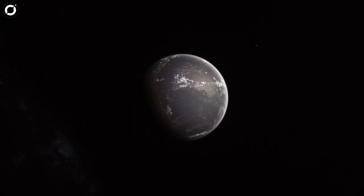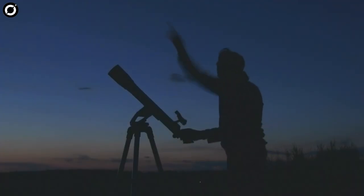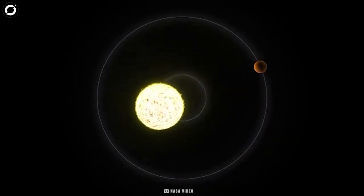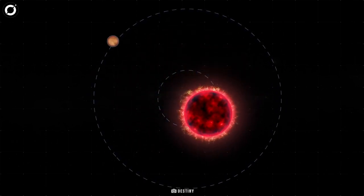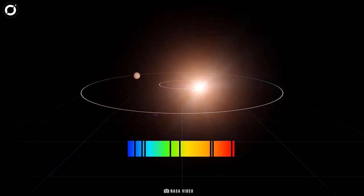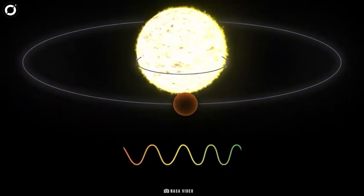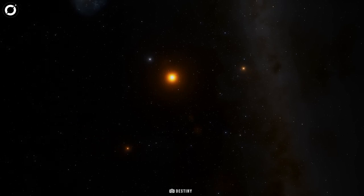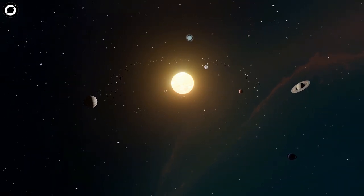The derived location turned out to be Proxima b, discovered in 2016 using the radial velocity method, where a star doesn't remain completely stationary when orbited by planets. Due to gravitational tug, the star moves in a small circle. Extremely sensitive spectrographs track the star's light spectrum, which appears blue-shifted when moving toward us and red-shifted when moving away. When these shifts repeat at regular intervals, it's accepted that the light shifting is caused by planetary tugging.